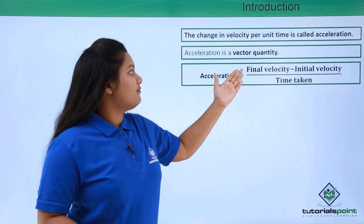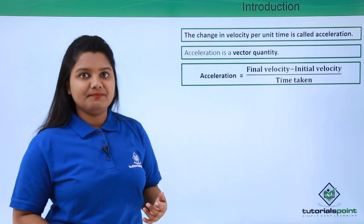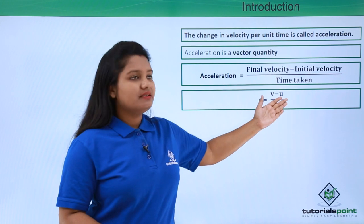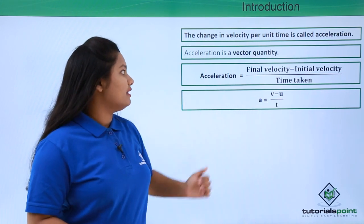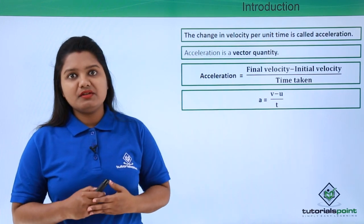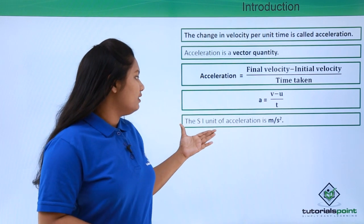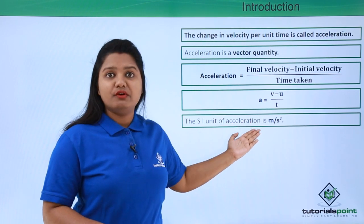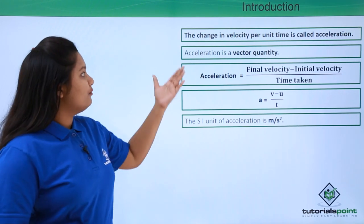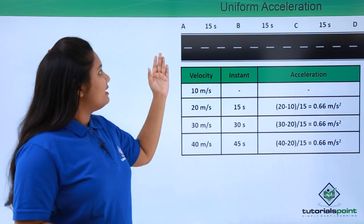Acceleration is mathematically given by the formula: final velocity minus initial velocity divided by the time taken, abbreviated as a = (v - u) / t, where a is the acceleration, v is the final velocity, u is the initial velocity, and t is the time interval. The SI unit of acceleration is meters per second squared.